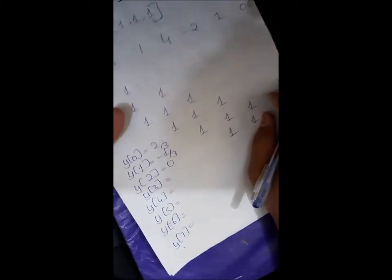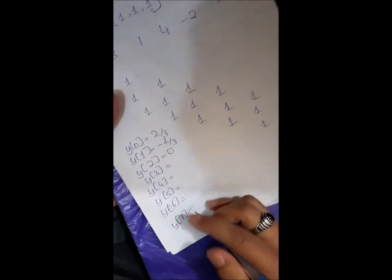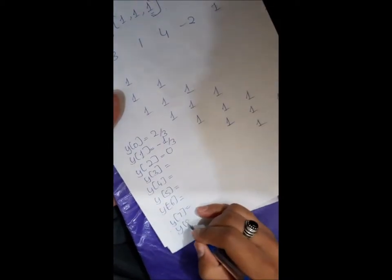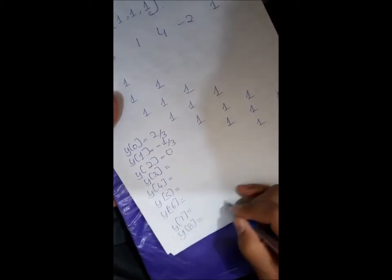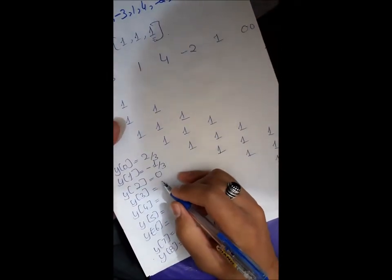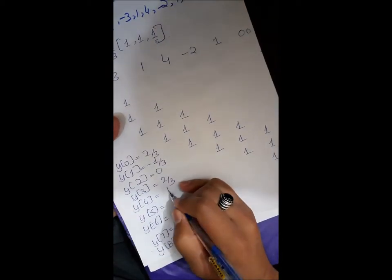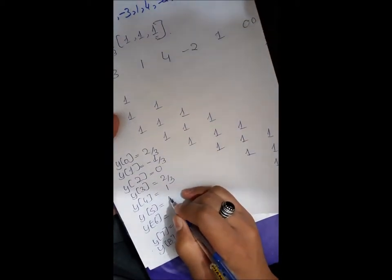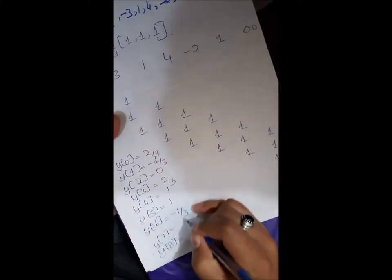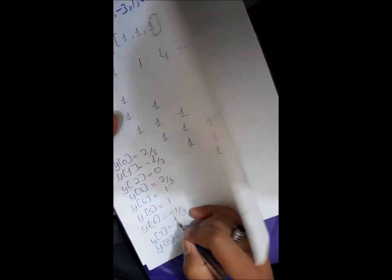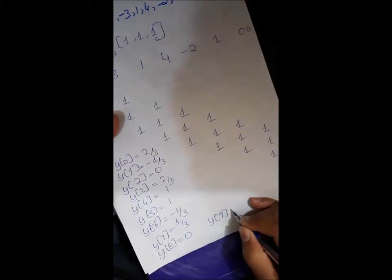So if we look at the respective values which are taken after solving: y of 3 is equals to 2 by 3, y of 4 is equals to 1, y of 5 is equals to 1, y of 6 is equals to minus 1 by 3, y of 7 is equals to 1 by 3, and y of 8 and y of 9 is equals to 0. Now we will apply fast Fourier transform in it.